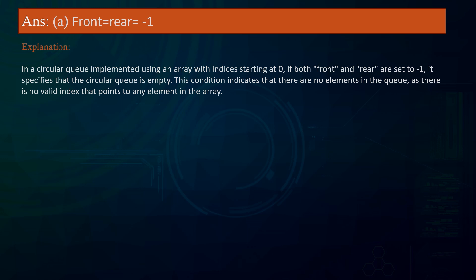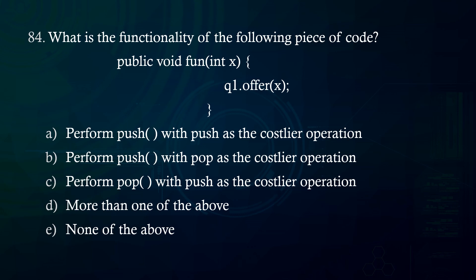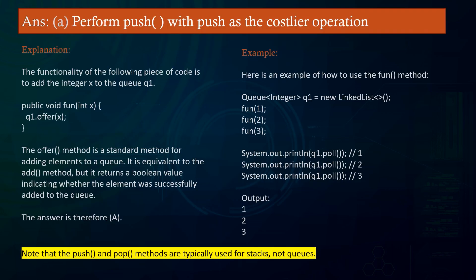What is the functionality of the following piece of code? A. Perform push with push as a costlier operation B. Perform push with pop as a costlier operation C. Perform pop with push as a costlier operation D. More than one of the above E. None of the above. Answer: Perform push with push as a costlier operation. Explanation: The functionality of the code is to add the integer x to queue1. The offer method is a standard method for adding elements to a queue, equivalent to the add method but returning a boolean value indicating whether the element was successfully added. The push and pop methods are typically used for stacks, not queues.